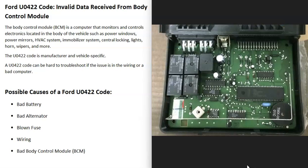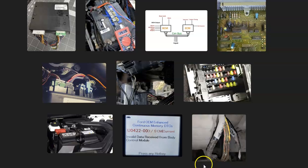But if there is a bad body control module, sometimes it can be hard to troubleshoot. This is like the wiring. When you go to deal with the wiring or the body control module, it can get kind of difficult when you're trying to troubleshoot them. But the next thing on the list is going to be a bad body control module.